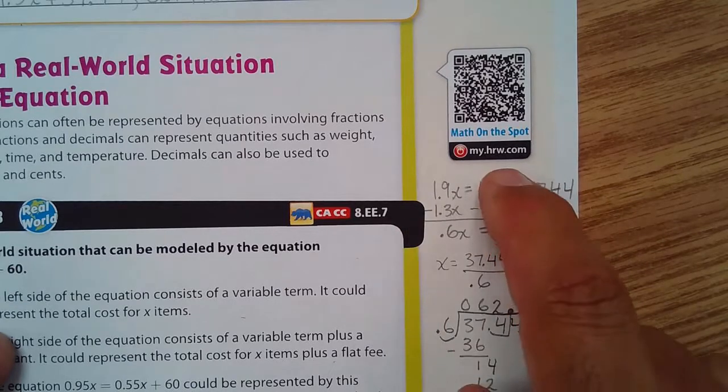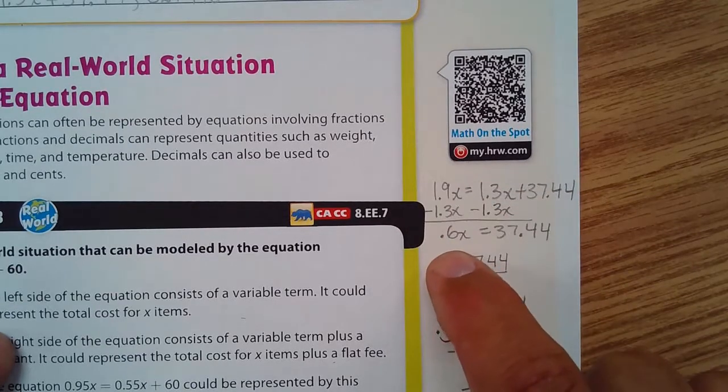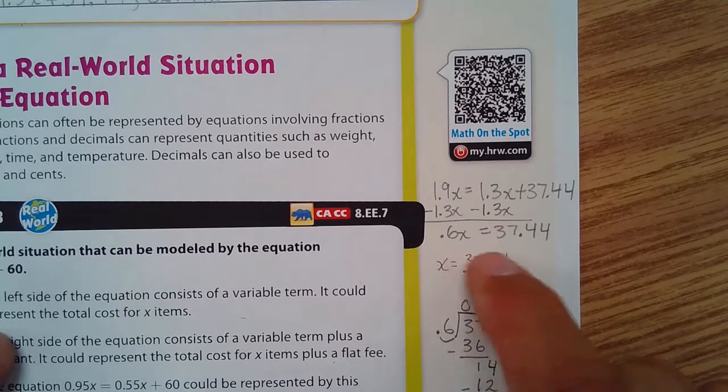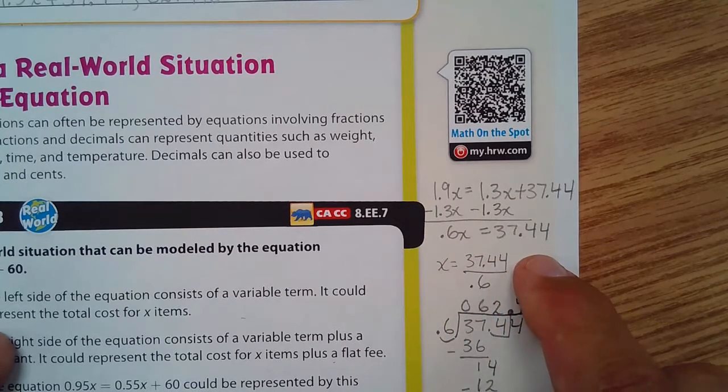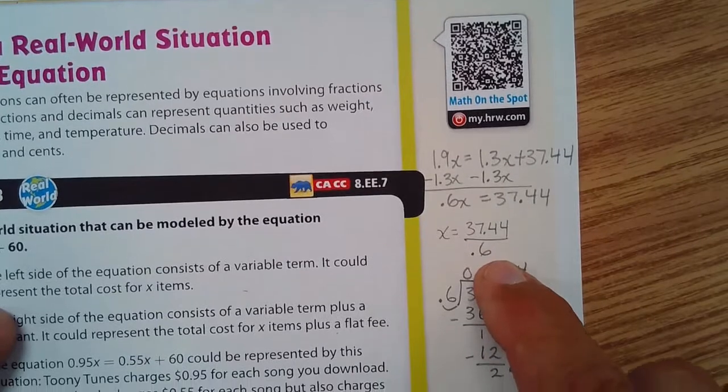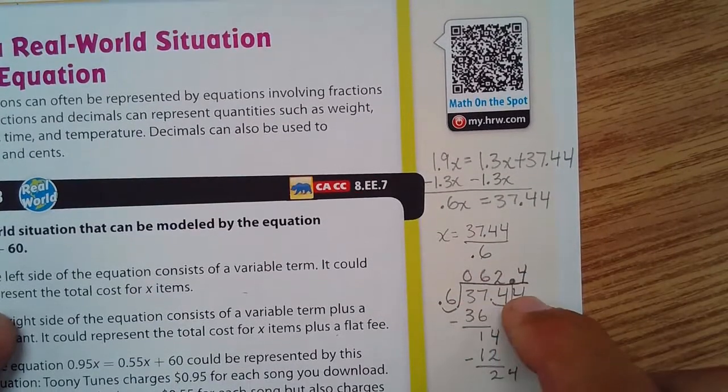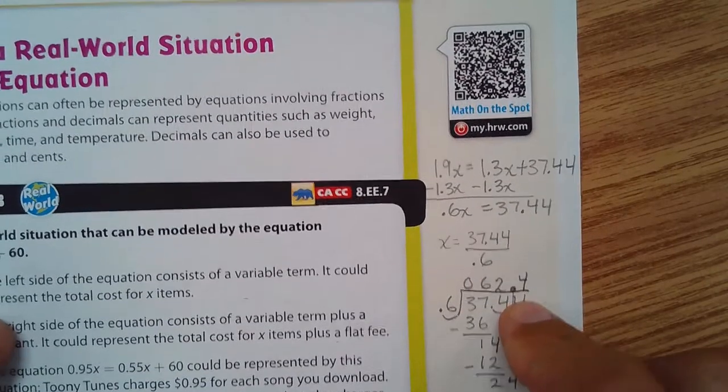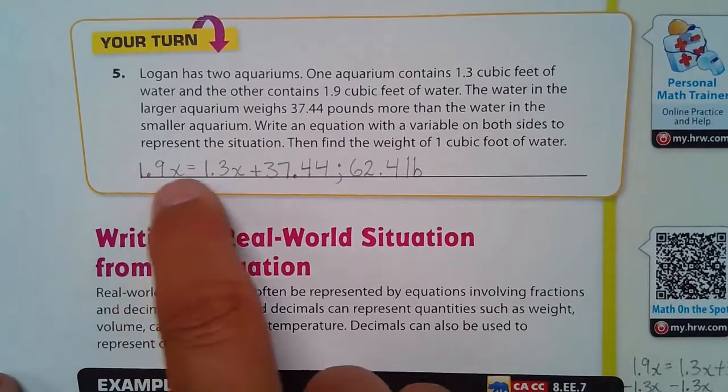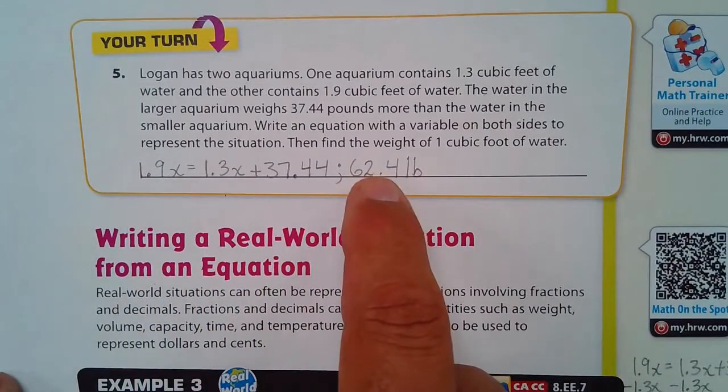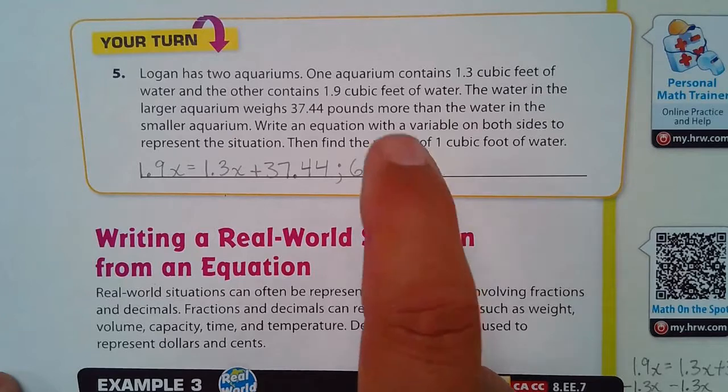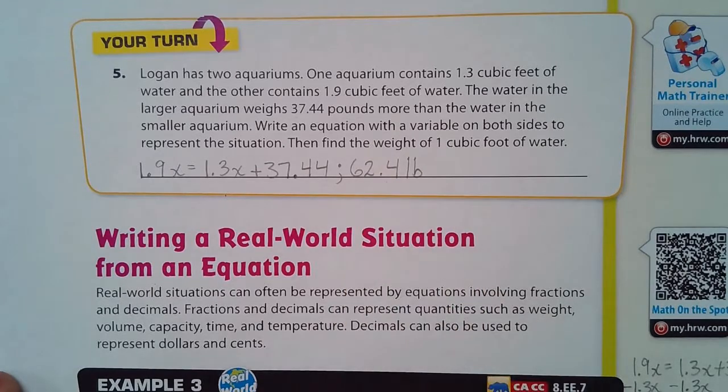Solving equations, just inverse operations. That's 0.6 of a number equals 37.44, which means you have to divide by 0.6, and I did that here, and you get 62.4. So here's my equation, and here is the weight of 1 cubic foot of water, 62.4 pounds.